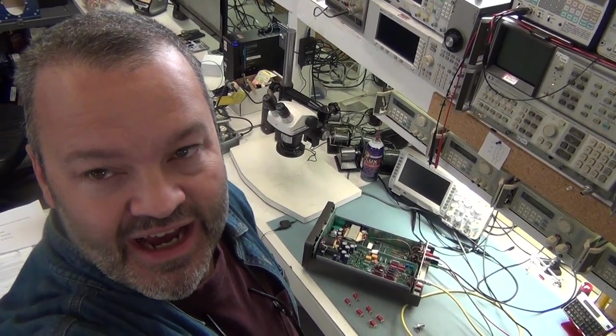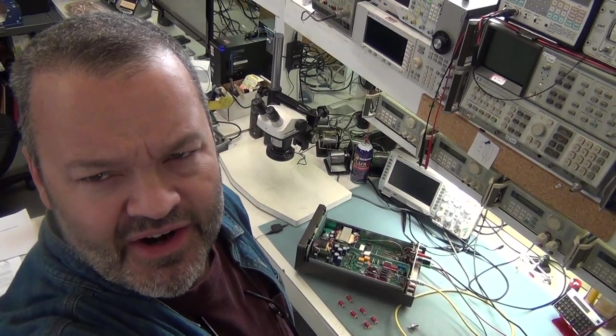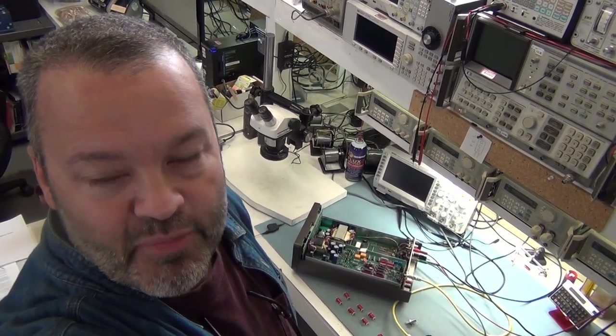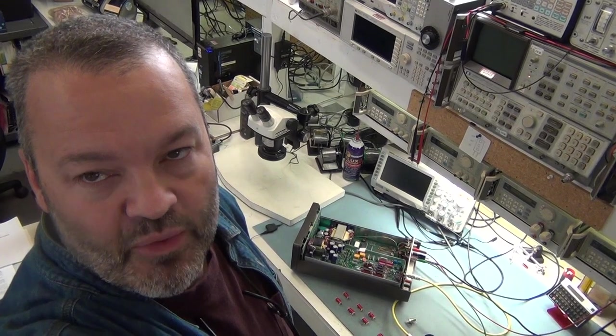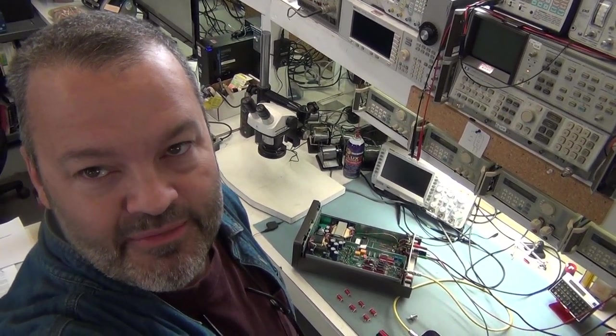Tom Matthews back again with part 2 on this Keithley 617 electrometer. In part 1, I showed one of the Terra Ohm relays that I replaced, and that made a big difference.